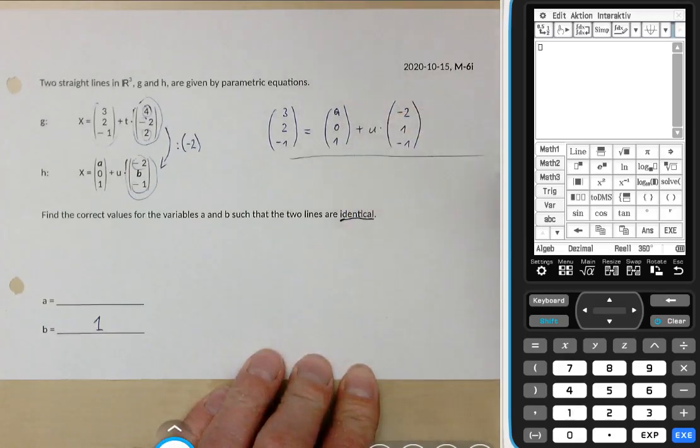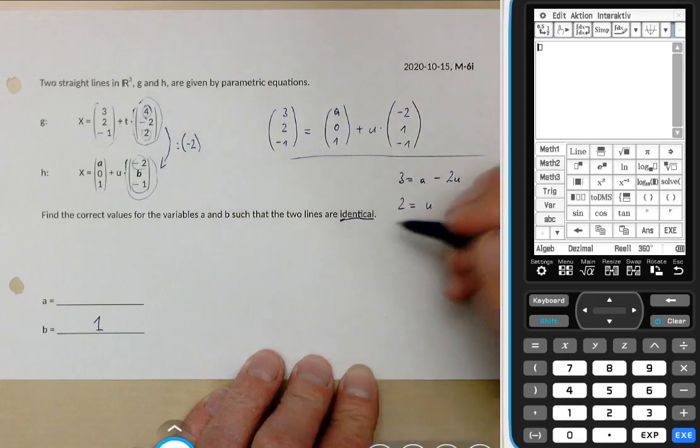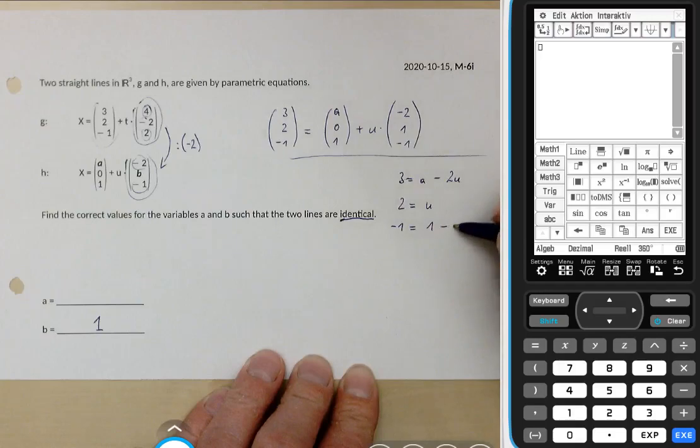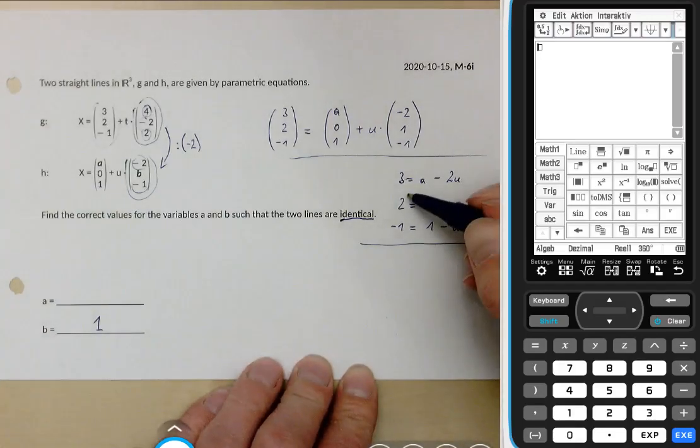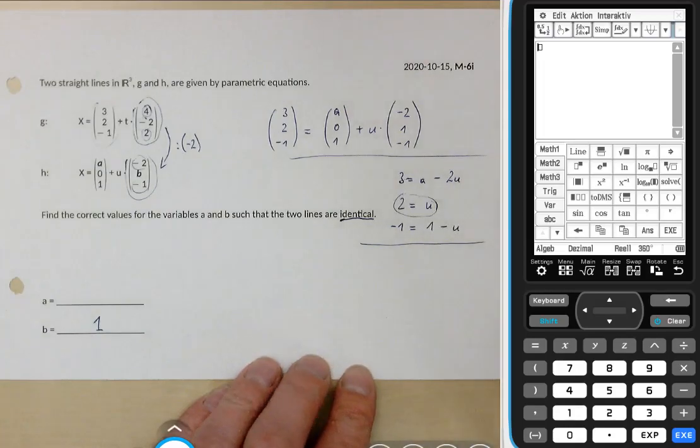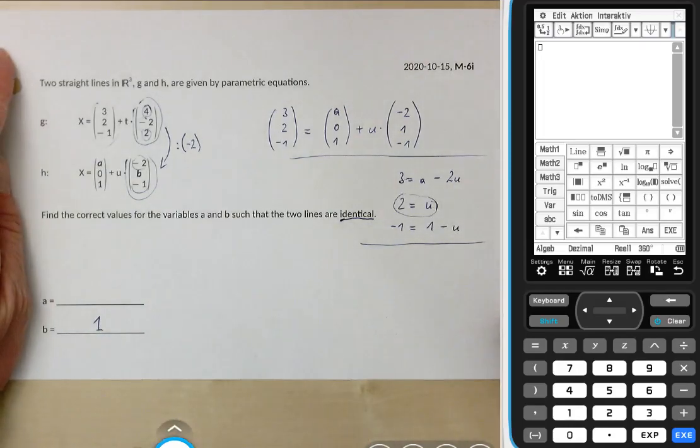There's actually a system of 3 equations. I'm writing it down. 3 equals a minus 2u for the first row, then 2 equals 0 plus u times 1 so just u, and -1 equals 1 minus u.